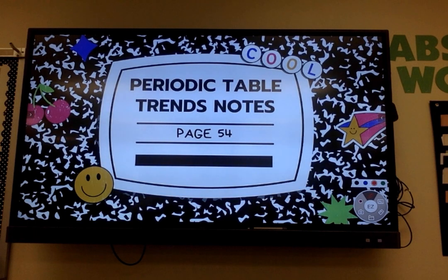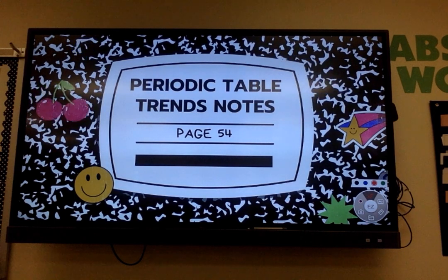Alright, so we're learning about periodic table trends today. You will need to know how to find different elements on the periodic table and tell me if they're bigger in size, if they have a higher electronegativity, things like that. We're gonna learn what all those words mean today and how to do that. Make sure you are following along and drawing the arrows correctly for each thing that we do.